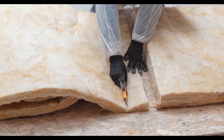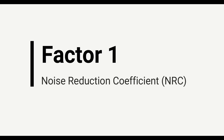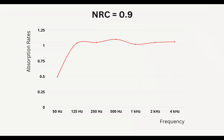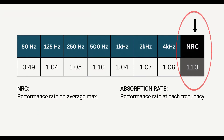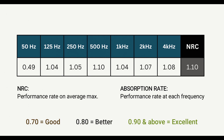When choosing the right absorption material for your project, there are several factors to consider. The first thing to look out for is the noise reduction coefficient, or NRC, including the absorption rate at each frequency range. The NRC simply means how well a material performs overall on average, while the absorption rates tell you how the material performs at affected frequency ranges. 0.7 means good absorption, 0.8 means better absorption, and 0.9 and above means excellent absorption.